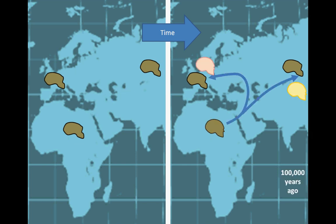However, the out of Africa hypothesis does not presume that all of these species contributed to the modern gene pool. Instead, it proposes that only descendants of Homo erectus in Africa gave rise to Homo sapiens, anatomically modern humans. This development was followed by a second migration out of Africa around 100,000 years ago, and the eventual replacement of other hominid species in Europe and Asia by the more well-adapted Homo sapiens.